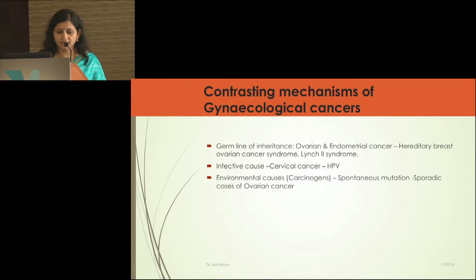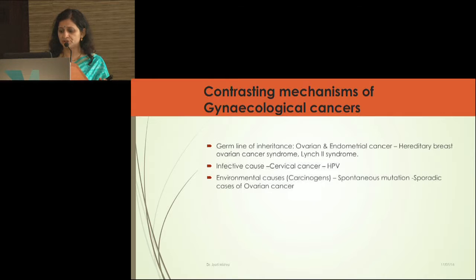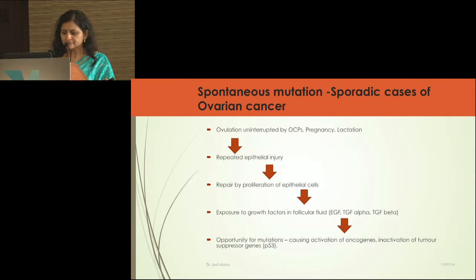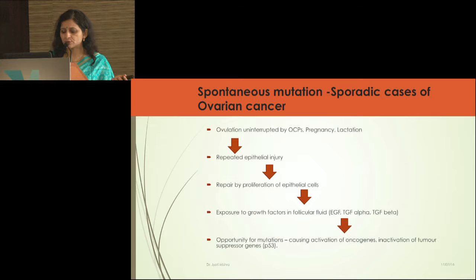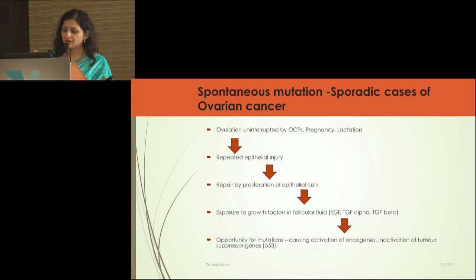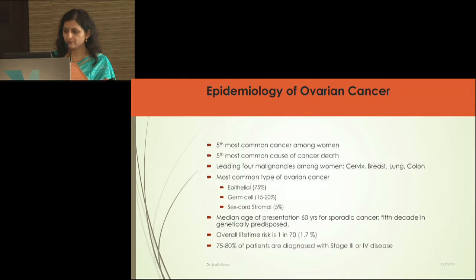There are different mechanisms of gynecological cancers. Germline inheritance is seen in ovarian and endometrial cancers, with two main syndromes: Hereditary Breast and Ovarian Cancer syndrome, and Lynch 2 syndrome. Cervical cancer has an infective origin due to human papillomavirus. For sporadic cases, wherever ovulation is uninterrupted — no OCPs, pregnancy, or lactation — there are repeated ovulations, repeated epithelial injuries, and repair by proliferation. Every month, ovarian cells are exposed to growth factors in follicular fluid, creating an opportunity for mutations to happen.